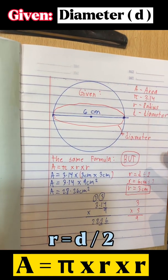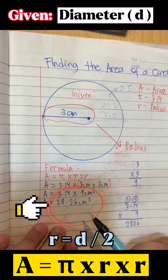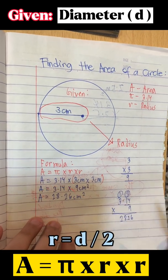And did you notice that we had the same answer? It's because radius is the half of diameter.